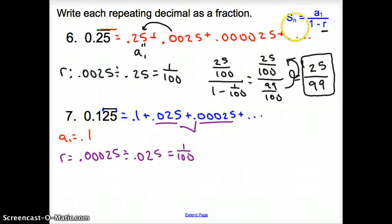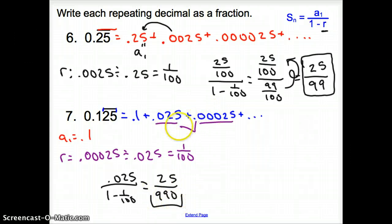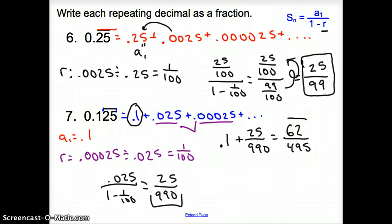Now, we have our R. We have our a sub 1. We can go ahead and use this infinite geometric series. We use a sub 1, which is 25 or 0.025, and we divide that by 1 minus 1 over 100. That will give us 25 over 990. Now, ladies and gentlemen, this is only half of it because it's only the repeating part, yes? What did we have in the very first place? We had that 0.1. So I take this and I add 0.1. So it's 0.1 plus 25 over 990 to finally get our repeating decimal of 62 over 495. And here is our fraction. This is our repeating decimal. This is our fraction.